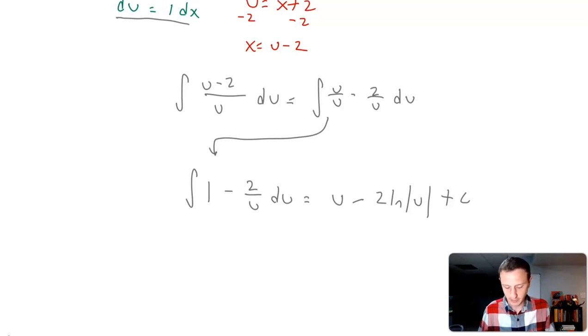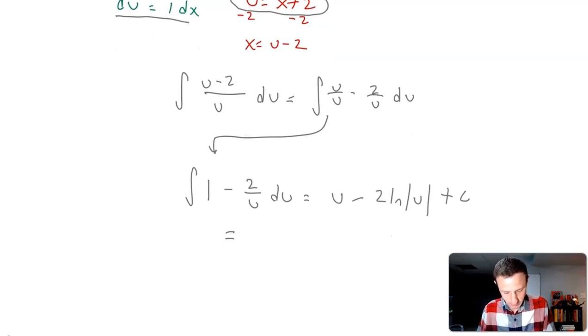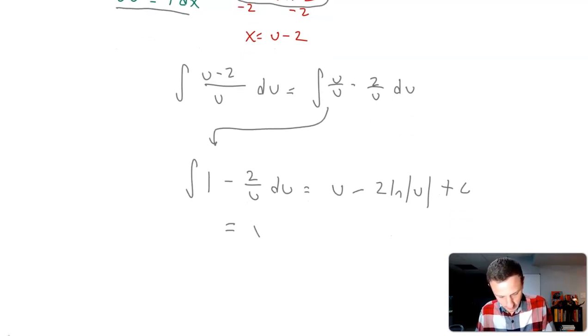So minus 2 natural log of u. Now we just have to put back in our u. U is equal to x plus 2, so our answer is x plus 2 minus 2 natural log of x plus 2 plus C.